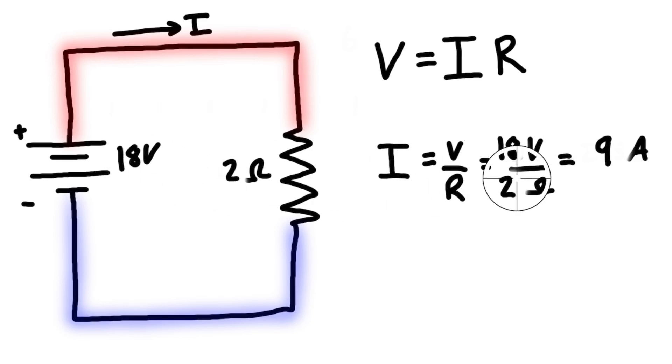We've doubled the current in the circuit by doubling the voltage and keeping resistance constant. This demonstrates the proportional relationship between voltage and current when resistance is constant. That's a quick introduction to Ohm's law.